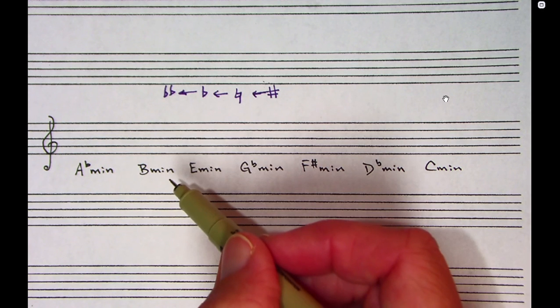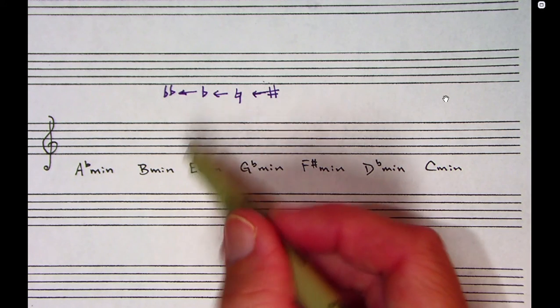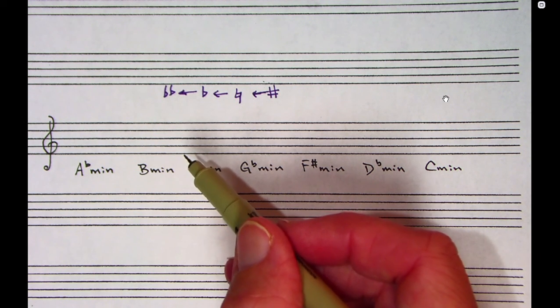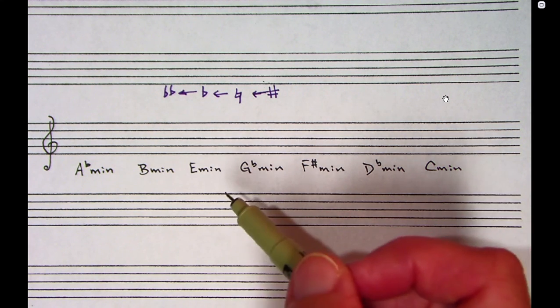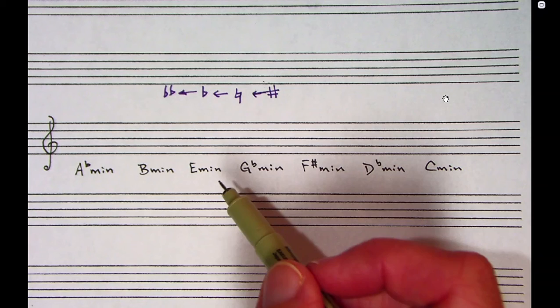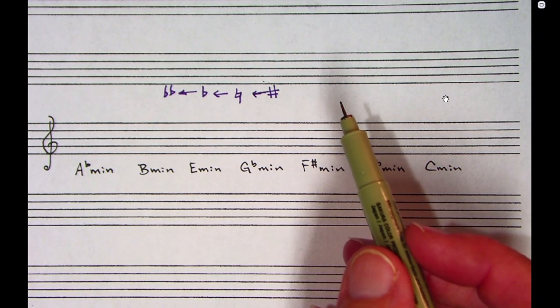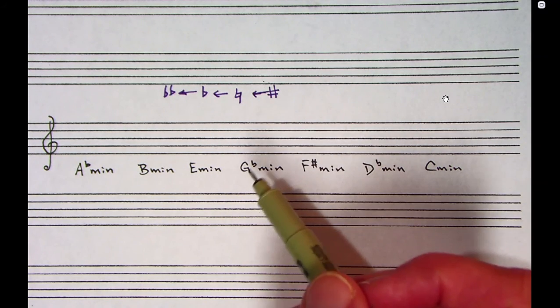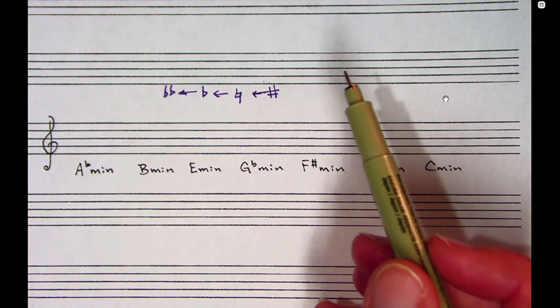So again, a minor triad is simply a major triad, any major triad, with the middle note lowered a half step. So if you were to sing a major triad: one, three, five. A minor would be one, three, five.